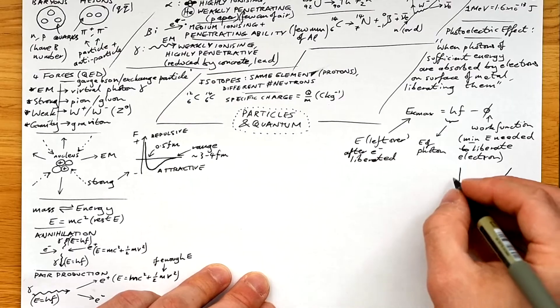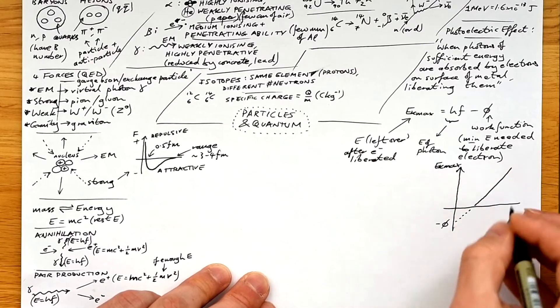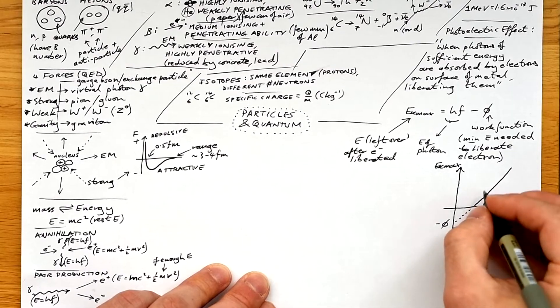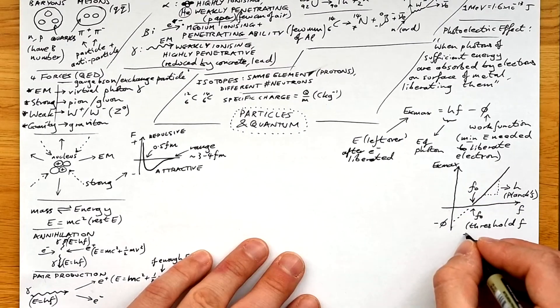Here's the graph, the y-intercept is minus phi. The x-intercept is the threshold frequency, that's the minimum frequency needed for electrons to be liberated. If the frequency is less than that, you won't see any electrons liberated.